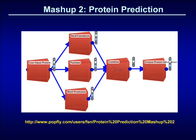This next mashup performs protein prediction. Once again the user supplies information to the user input protein block, only this time a protein sequence is supplied. The sequence is passed to protein prediction blocks: back translation, pep stats and motif prediction. Once the results have been predicted, they are combined and displayed using the output protein information block.